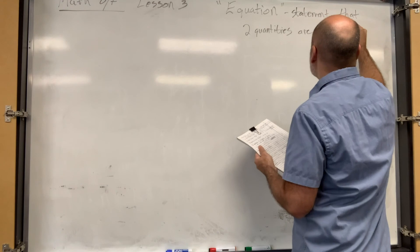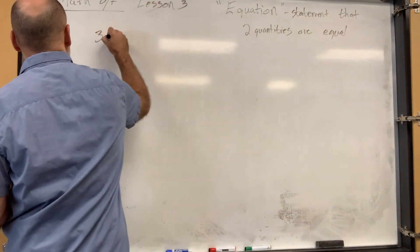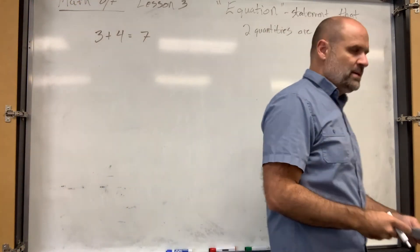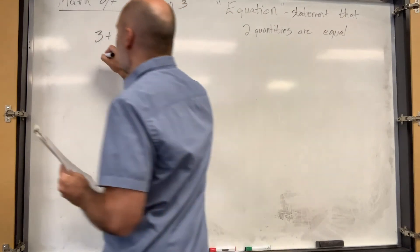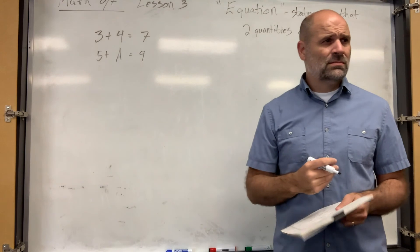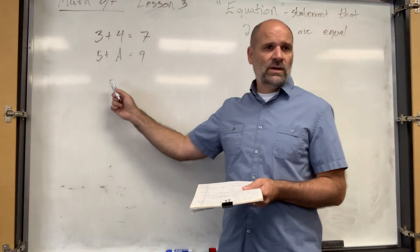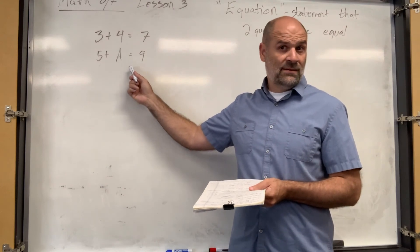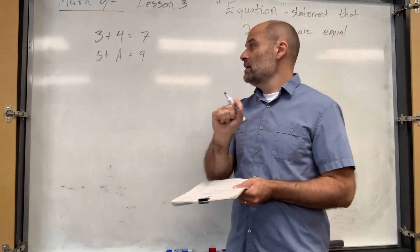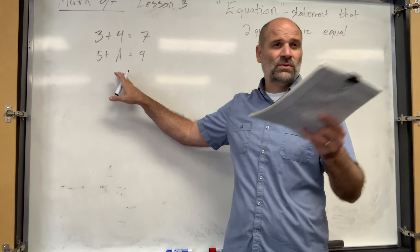Three plus four equals seven — that's an equation. Or you could say five plus a equals nine. Is that an equation? Sure. Now, it's what we call a conditional equation because we don't know if this is true yet. But if a certain condition is met, then we can say it's true. What does the condition have to be for this to be a true equation?